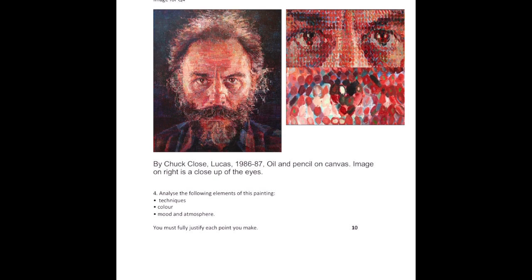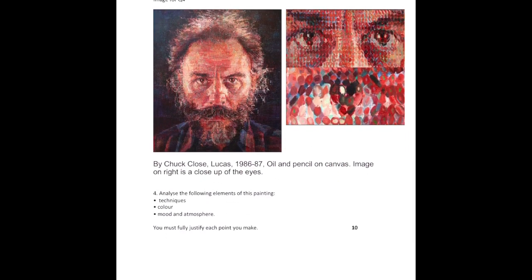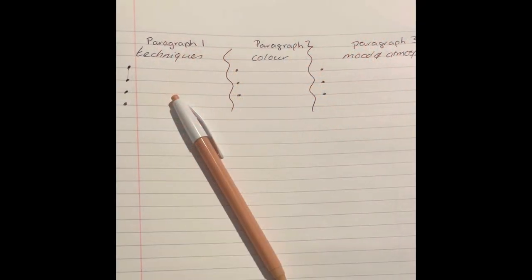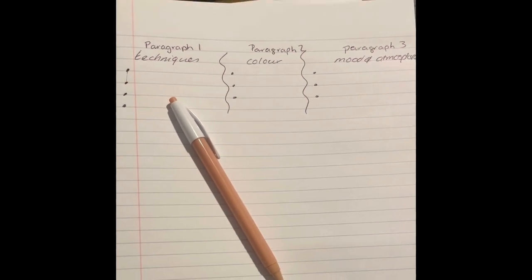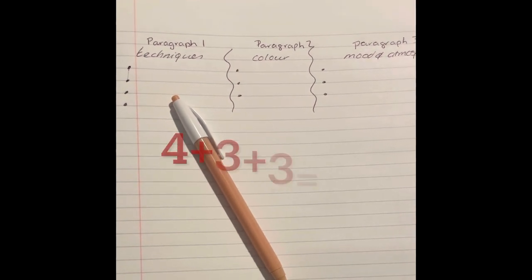Remember to read the information underneath the image which tells you who the artwork is done by, what the artist has used, and the date in which it was made. The questions are always worth 10 marks. There are three prompts that you have to respond to. These are shown where the bullet points are.